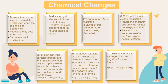Aqueous solution: when salt dissolves in water, they separate into their ions which are free to move — positive ions and negative ions are formed. For example, NaCl (solid) in aqueous form gives Na⁺ (aq) + Cl⁻ (aq). For a solution of acid, hydrogen ions and negative ions are formed. HCl (gas) ionises to form 2H⁺ (aq) + Cl⁻ (aq).